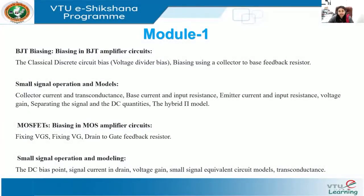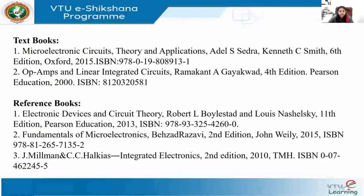We will also cover base current and input resistance, emitter current and input resistance, voltage gain, separating signal and DC quantities, and the hybrid-pi model. For MOSFET biasing and MOSFET amplifier circuits, we will discuss different approaches like fixing VGS, fixing VG, and drain-to-gate feedback resistors. For small signal operations in MOSFETs, we will discuss DC bias point, signal current in drain, voltage gain, small signal equivalent circuit model, and transconductance.